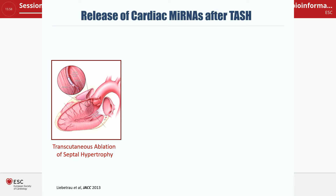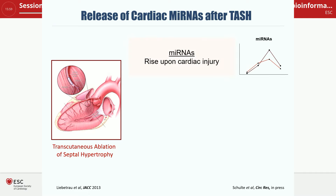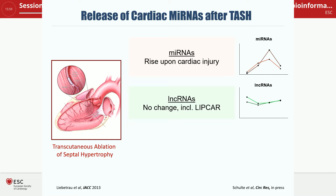Back to our question: what is the best biomarker in response to cardiac injury? In patients with myocardial infarction, we usually don't know when the initial injury occurred. The advantage of the TASH model is that we induce myocardial infarction, so the time of onset of injury is exactly known. The key summary: cardiac microRNAs, as expected, rise after TASH. But then came the first surprise — the long non-coding RNAs, including LIPCAR, showed no change, suggesting these long non-coding RNAs in plasma are not derived from cardiac tissue.